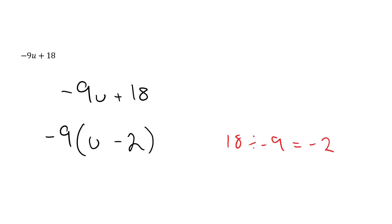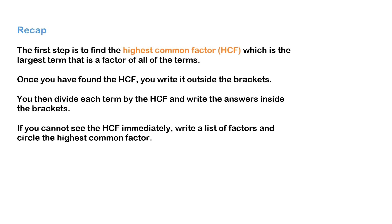To end the video, here's a recap. The first step is to find the highest common factor, which is the largest term that is a factor of all the other terms. This sits outside the brackets, and to find what goes inside you divide each term by that highest common factor. If you cannot see the highest common factor immediately, write a list of factors and circle the highest common one. If you can see it straight away, you do not need to do this step.